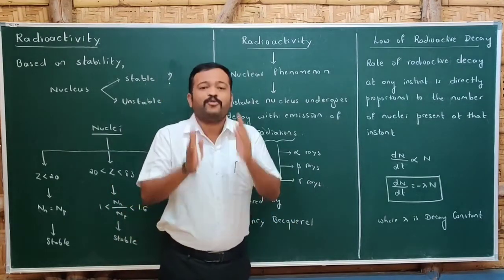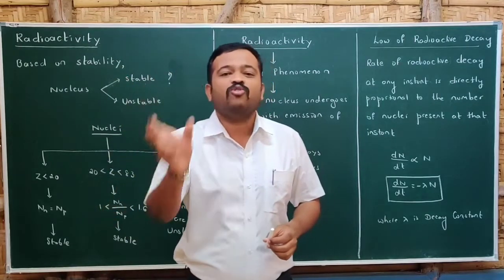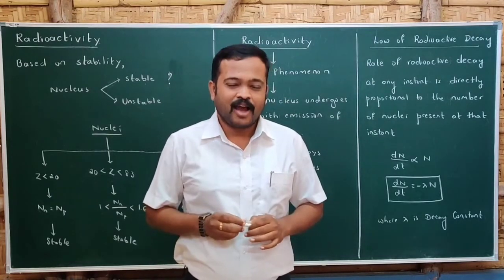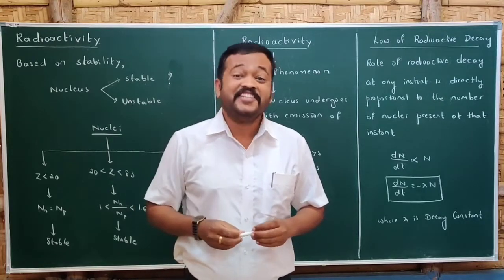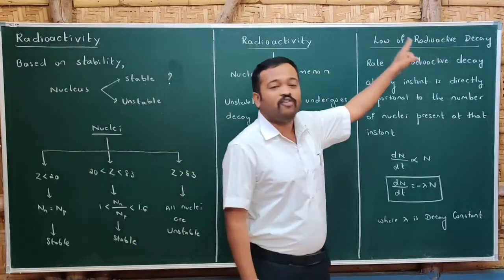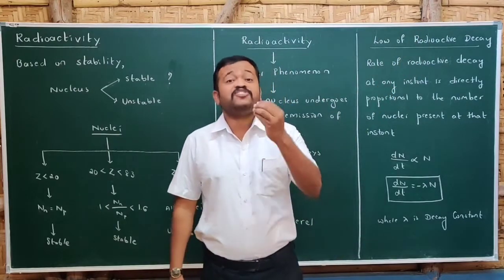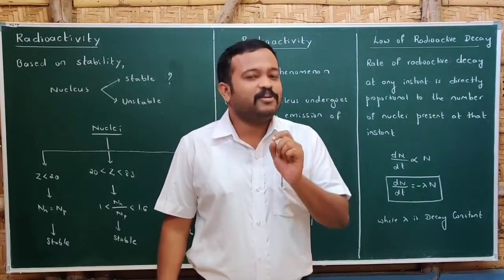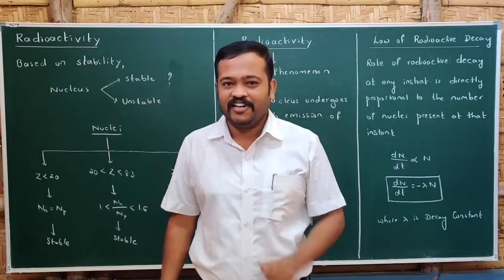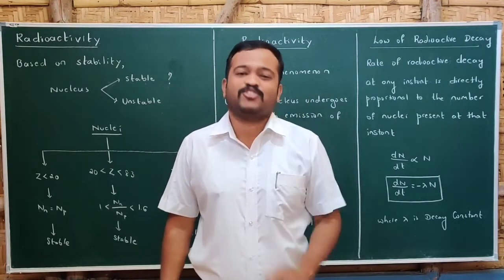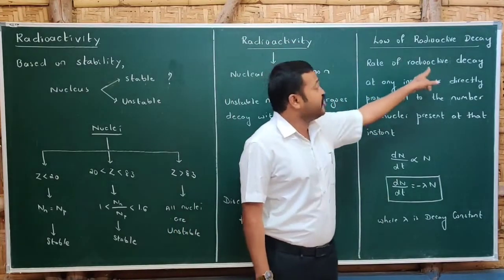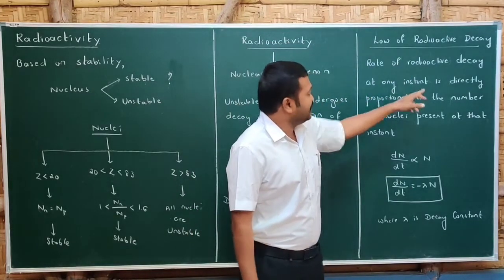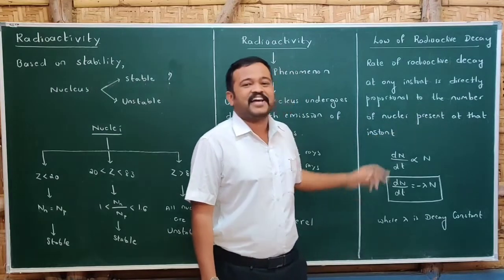The unstable nucleus always wants to become stable and emits certain radiations in the process. To understand how fast the nucleus will disintegrate, we use the law of radioactive decay. Radioactive decay does not depend on temperature or pressure — it depends on only one quantity: the number of nuclei present at that instant. The rate of radioactive decay at any instant is directly proportional to the number of nuclei present at that instant.